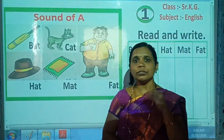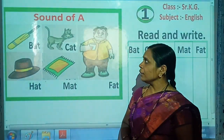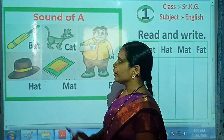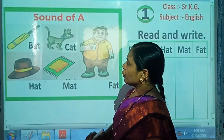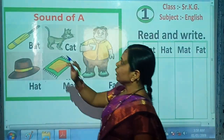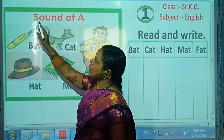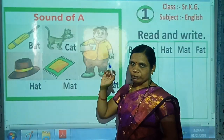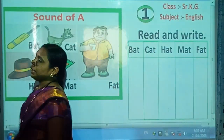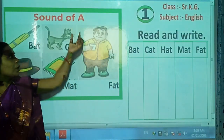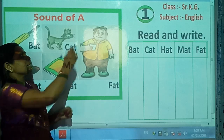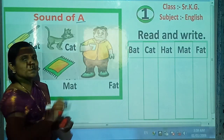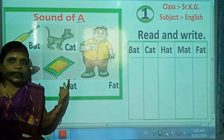These 5 are the vowel sounds in the English alphabet. So today we will learn about the sound of A. A is pronounced as 'A'.